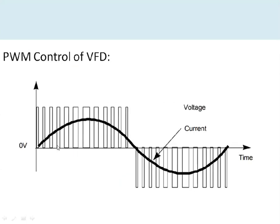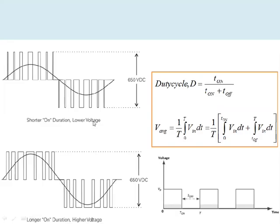This is the PWM control of the VFD. The on-off time duration of the pulses is varied — by varying this on/off duration, the voltage is varied. These voltage pulses are applied to the stator winding, which behaves as an inductor and opposes sudden changes in current. When a pulse is applied, a linear ramp is generated in the current, and these pulses are switched on and off such that a sinusoidal current is generated in the stator winding. The average voltage is given by V_avg = (1/T) × ∫₀ᵀ Vn dt.